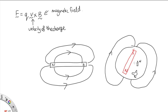A major difference between magnetic fields and electric fields is that magnets can only be found as a dipole — that is, a North and a South Pole joined together. Nobody's ever found a magnetic monopole, whereas electric charges are often found as just a positive or just a negative.